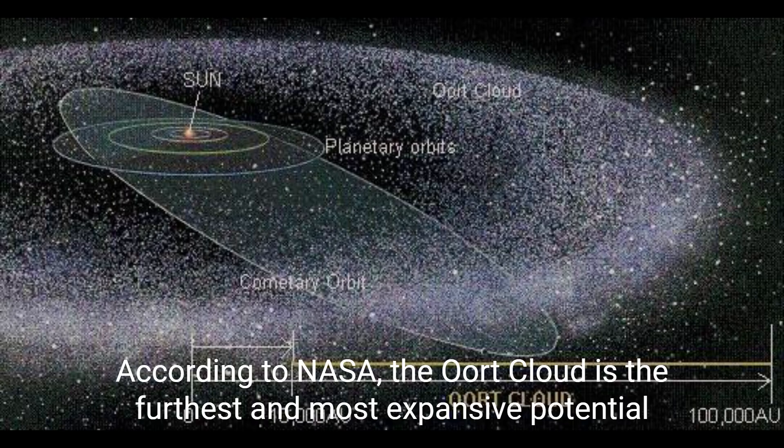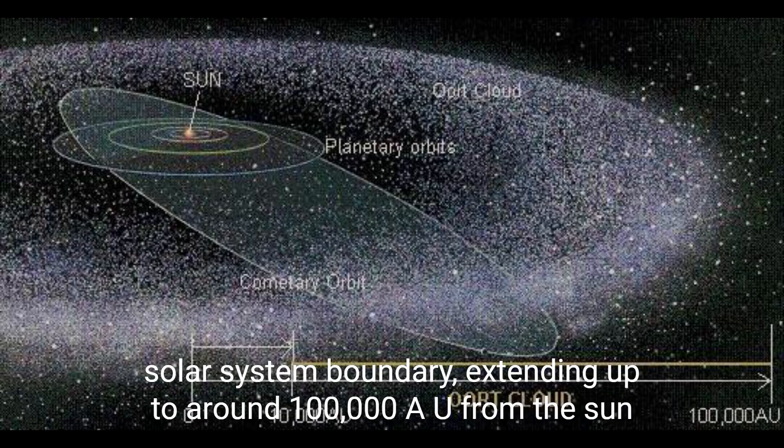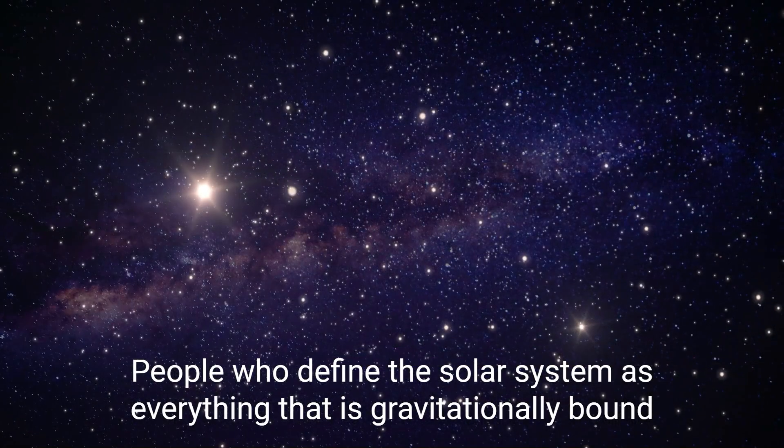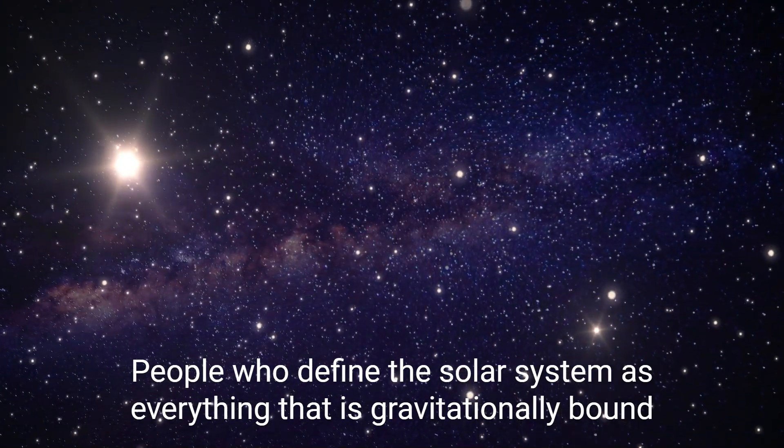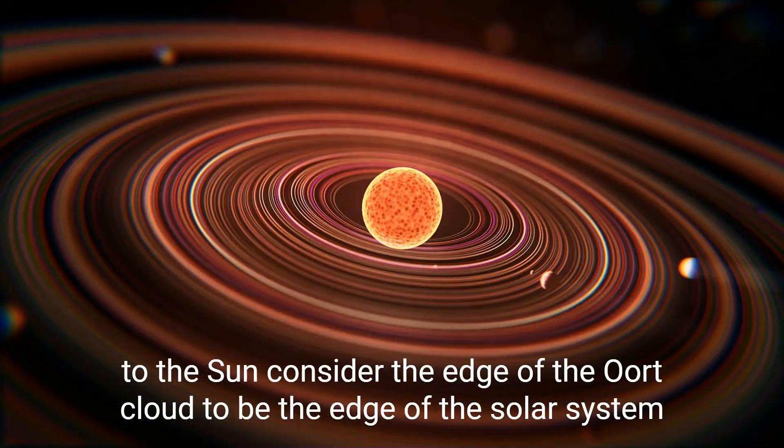According to NASA, the Oort cloud is the furthest and most expansive potential solar system boundary, extending up to around 100,000 AU from the sun. People who define the solar system as everything that is gravitationally bound to the sun consider the edge of the Oort cloud to be the edge of the solar system.